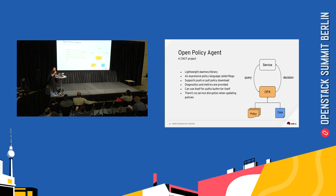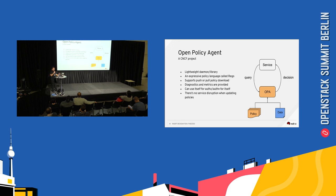So what's Open Policy Agent? The main thing about it is that it's a service daemon or a library that you upload your policies to. Your service will talk to it and ask: can this entity do whatever it wants to do? OPA will answer that query. It has its own policy language, so it doesn't use the same language as Oslo Policy. But it has a lot of nice features such as Live Reload. You can authenticate and authorize queries towards OPA using its own language — the same language you use to write your own policy. It's quite performant, and when you do an update of your policy there is no service disruption — it just reloads.